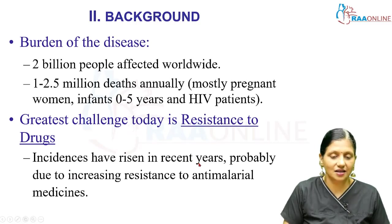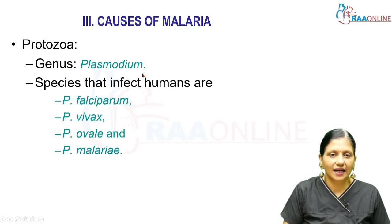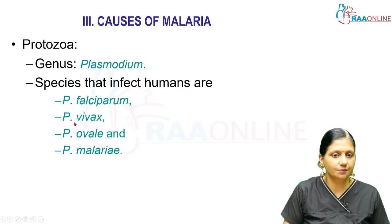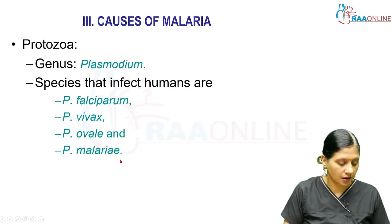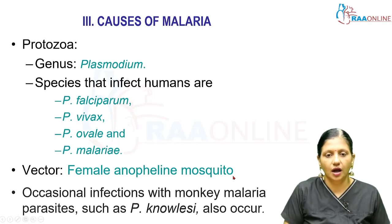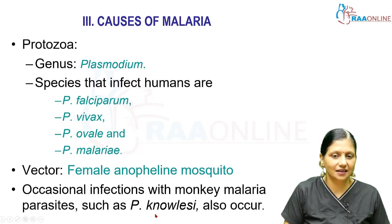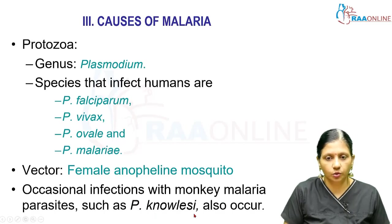Malaria is caused by a protozoan belonging to Plasmodium. The species that infect humans are Plasmodium falciparum, Plasmodium vivax, Plasmodium ovale, and Plasmodium malariae. The vector for malaria is the female Anopheles mosquito. Occasional infections can also happen with monkey malarial parasites such as Plasmodium knowlesi.